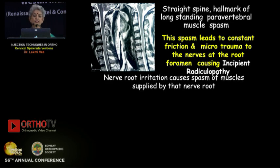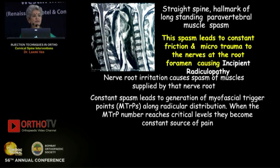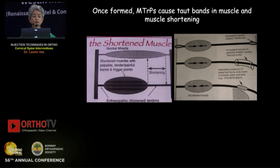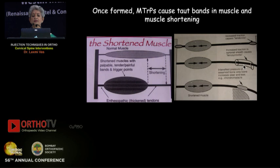This nerve root irritation causes spasm of muscles supplied by that particular nerve root. This constant spasm generates pain by generating myofascial trigger points — muscle knots where actin and myosin stick to each other. After a while, they become spontaneously painful and any movement of the muscle becomes painful. These myofascial trigger points also have motor effects in that they cause taut bands in the muscles, which shorten the muscle, leading to secondary issues at the tendon and tenosynovitis.